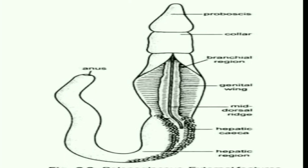Balanoglossus is a plankton feeder — it feeds on plankton and organic debris. It moves with the help of cilia present all over the body. Moreover, it is unisexual; sexes are separate but it shows external fertilization. There is a free-swimming larva called tornaria larva in its life history, making development indirect. It has a very good power of regeneration.